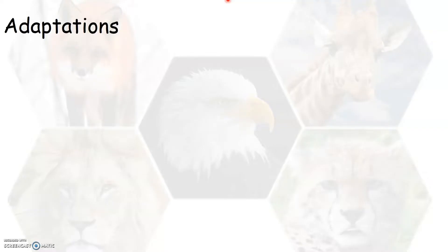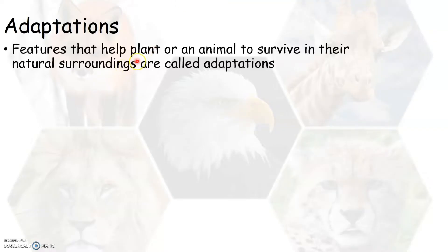These special features that help a plant or an animal to survive in their natural surroundings are called adaptations. Animals adapt themselves to a particular habitat especially for food, shelter, and also to protect themselves from their enemies. But if these animals are not able to adapt themselves to their natural surroundings, then they might become extinct, which means they might no longer exist on this earth.